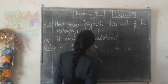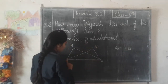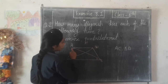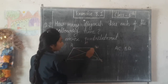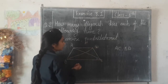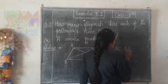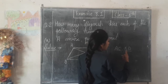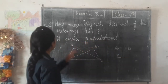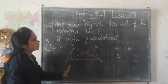The second diagonal is BD. Checking remaining vertices — C and D connections are already counted. So the diagonals are AC and BD. A convex quadrilateral has only 2 diagonals.